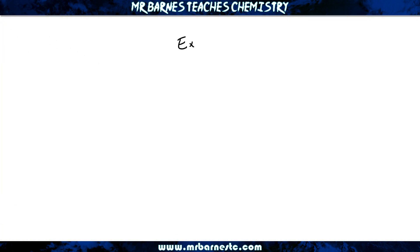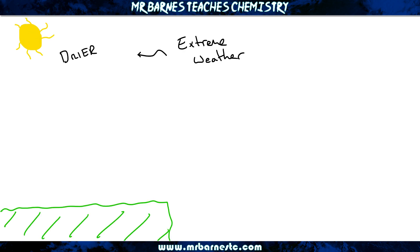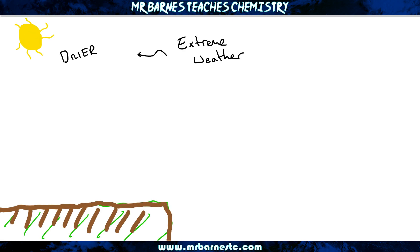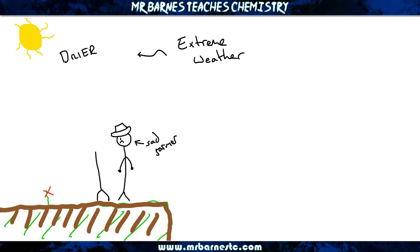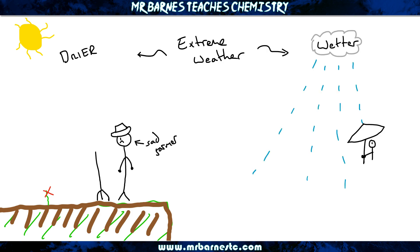The next area is extreme weather. It might make some parts of the world drier, making it really difficult for plants to grow, and in some parts it might become a lot wetter. You've also got other types of extreme weather, such as heat waves, powerful storms, or heavy rainfall.